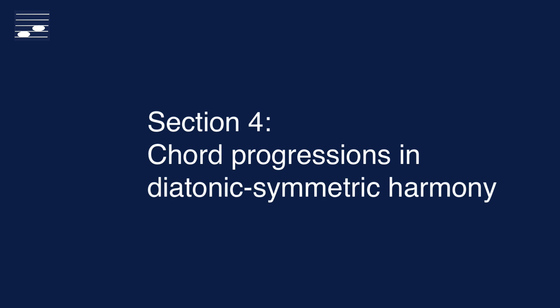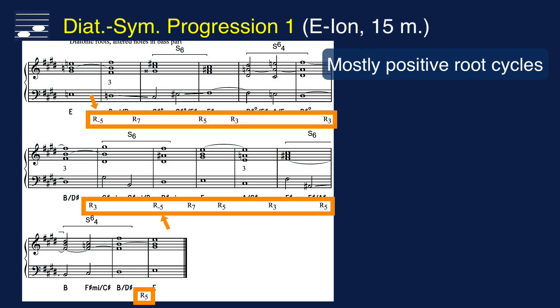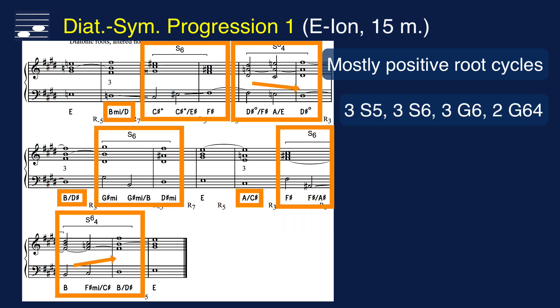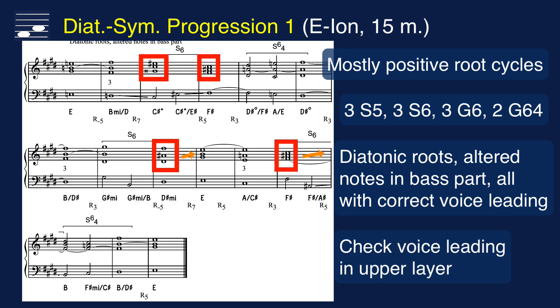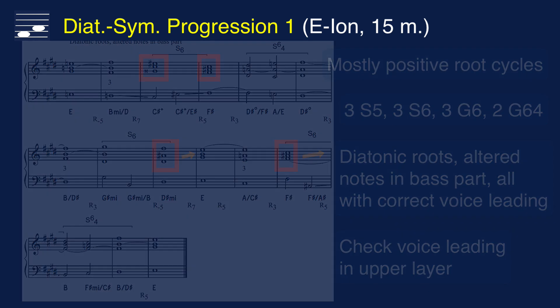Next, let's combine all previous phenomena in somewhat longer chord progressions. Progression 1 consists of 15 chords in E major with positive root cycles dominating. We see chords in both root and first inversion position, and five passing chord groups have been inserted. These yield altered notes in the bass that all resolve in the right direction. Also check the resolution in the upper layer — we find some unexpected motion in the parts, as is typical for this harmony type. I might have improved the voice leading but decided to leave the example as is.